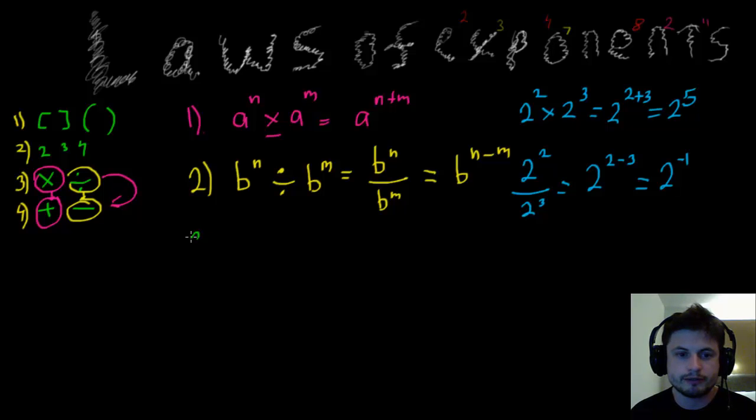Next, law number three, and that's if you have brackets. So imagine you have A to the power of N, but it's actually inside the brackets and there's M power on the outside. So what happens then? What happens when you have brackets? With brackets, basically you kind of jump down as well. But in this case, you jump down to right here to multiplication.